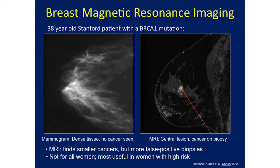The other tool we can use is MRI — magnetic resonance imaging — which is particularly good for young, high-risk women with dense breast tissue. This is a real patient from Stanford who had a BRCA1 mutation. Her mammogram on the left was quite dense and called negative, but her MRI on the right had a white central lesion — pointed out with an arrow — that turned out to be cancer and would have been missed had we not escalated her screening based on her genetic mutation status. So MRI can be a very good tool for high-risk women, though it's not very useful for average-risk women, in whom it mostly finds false positives.